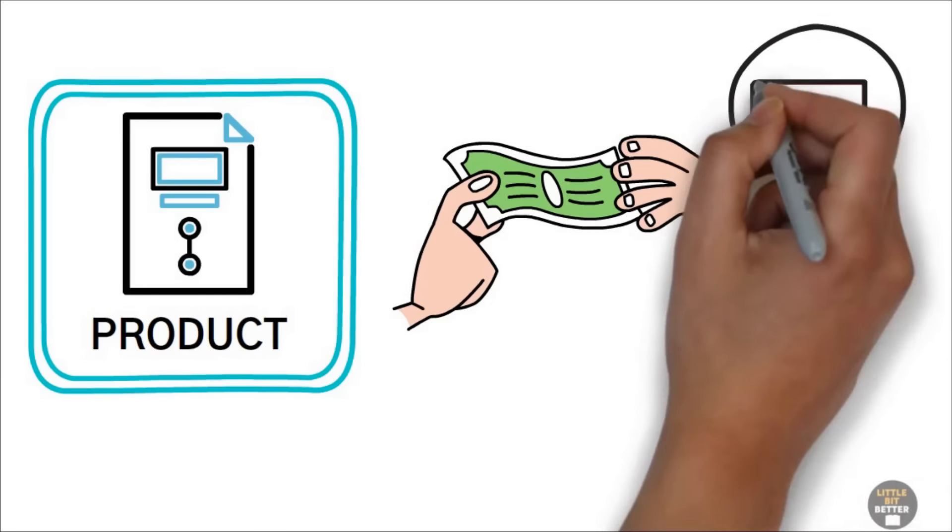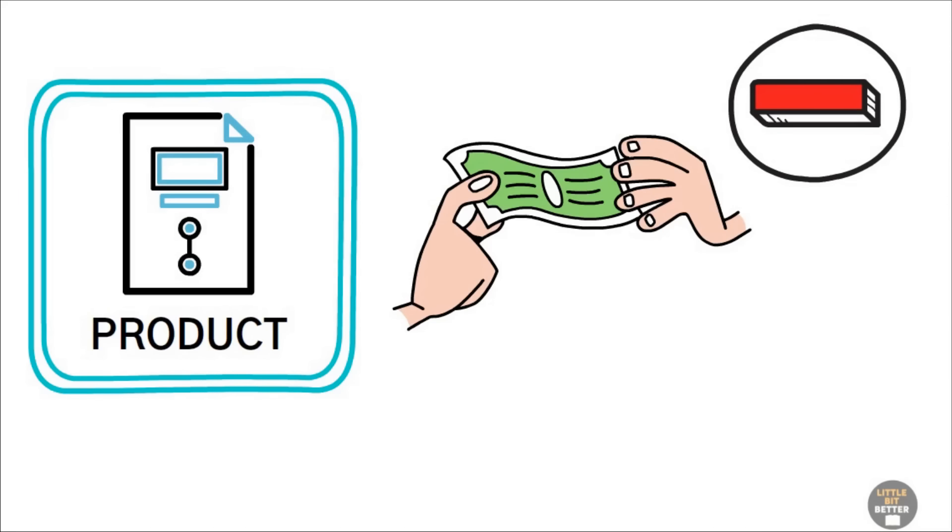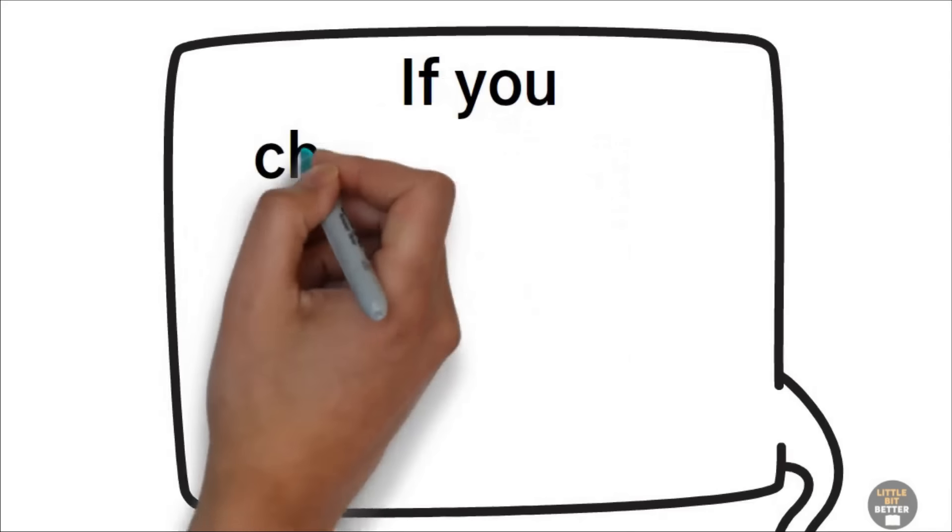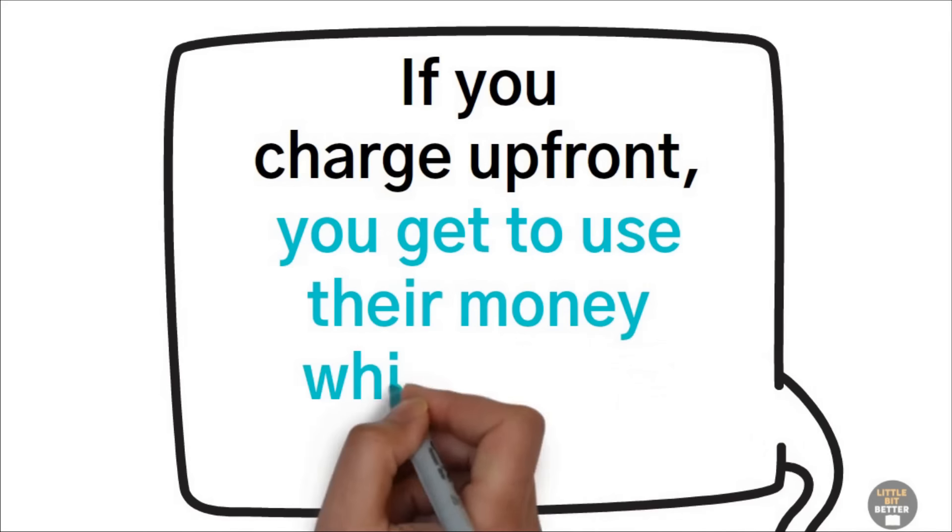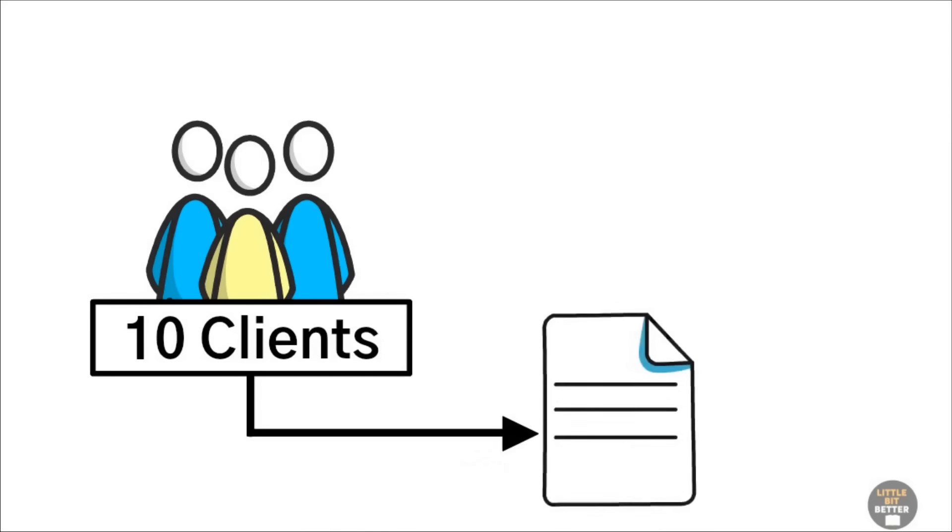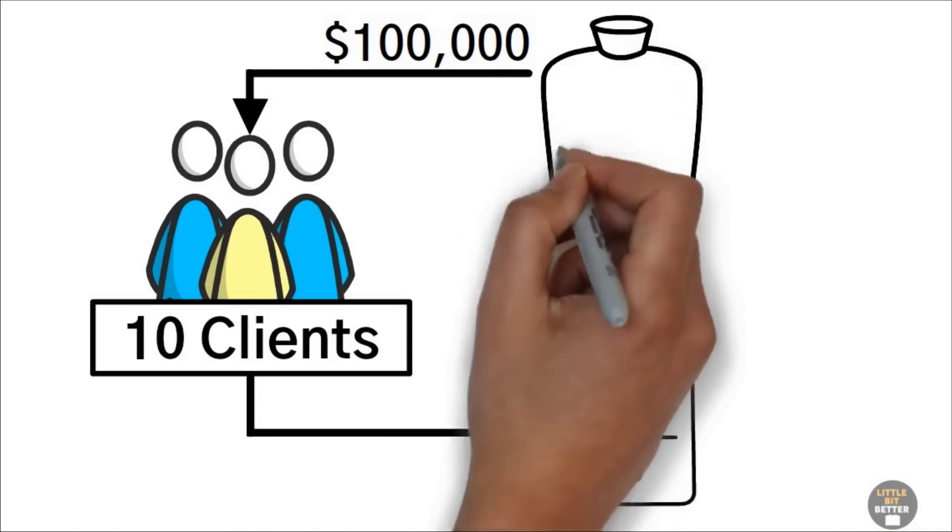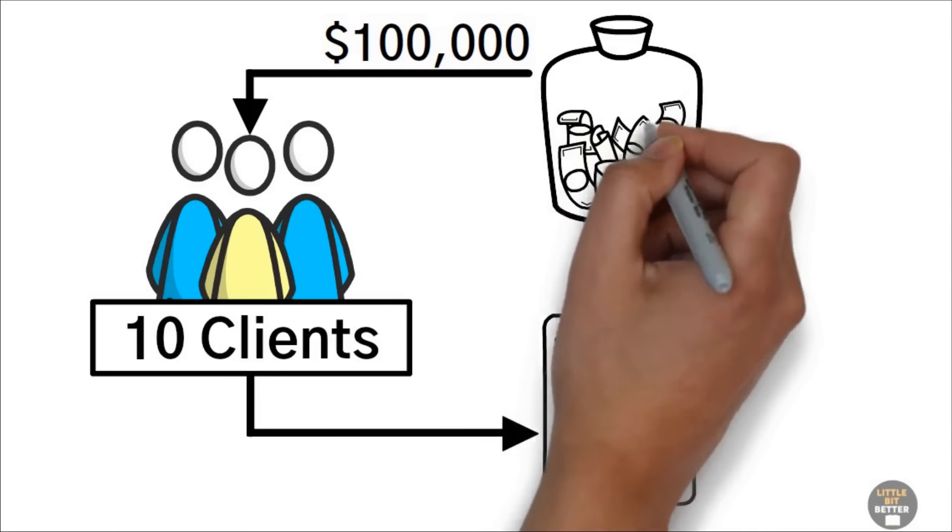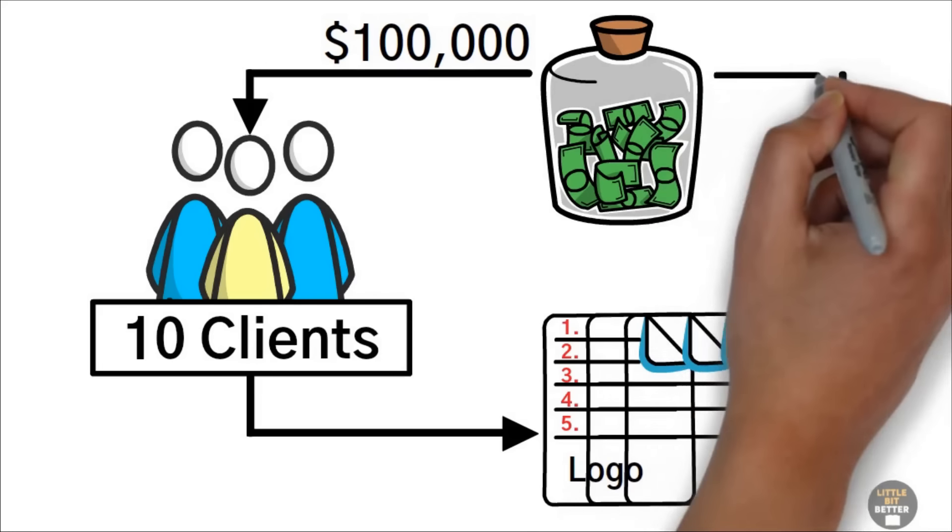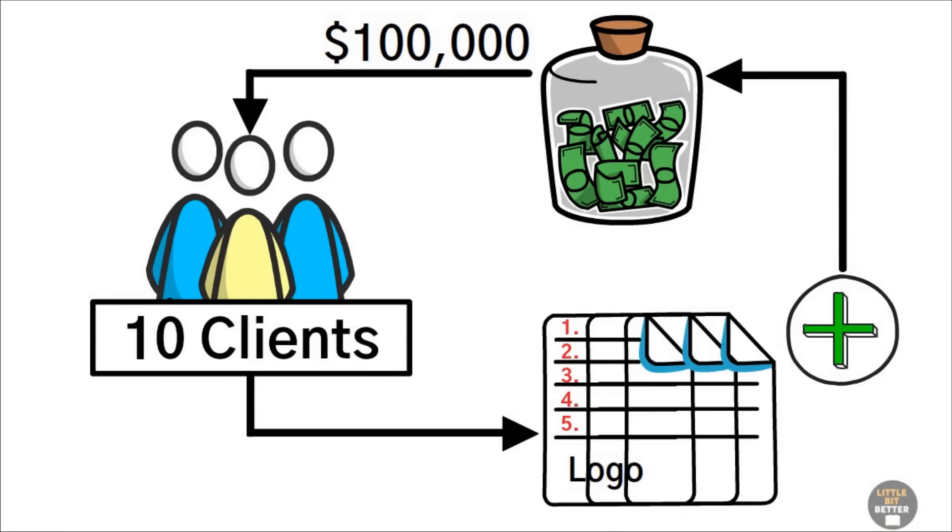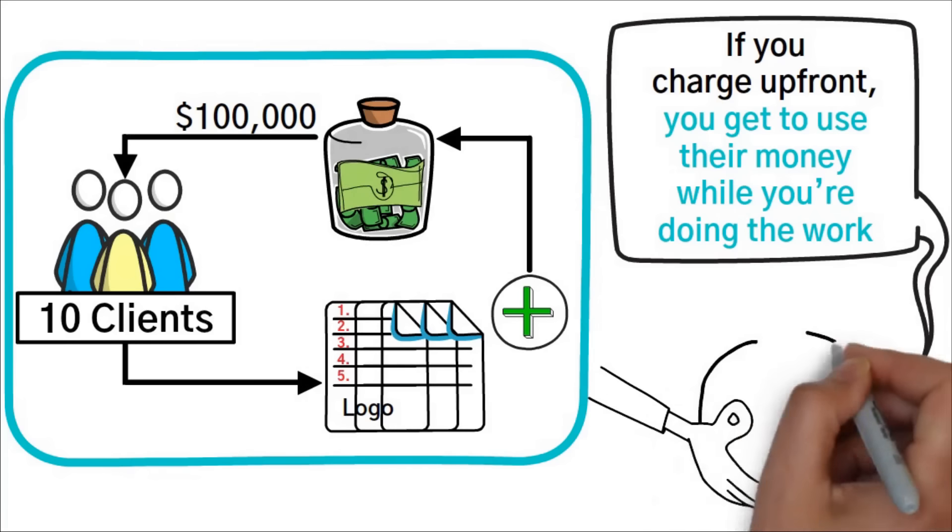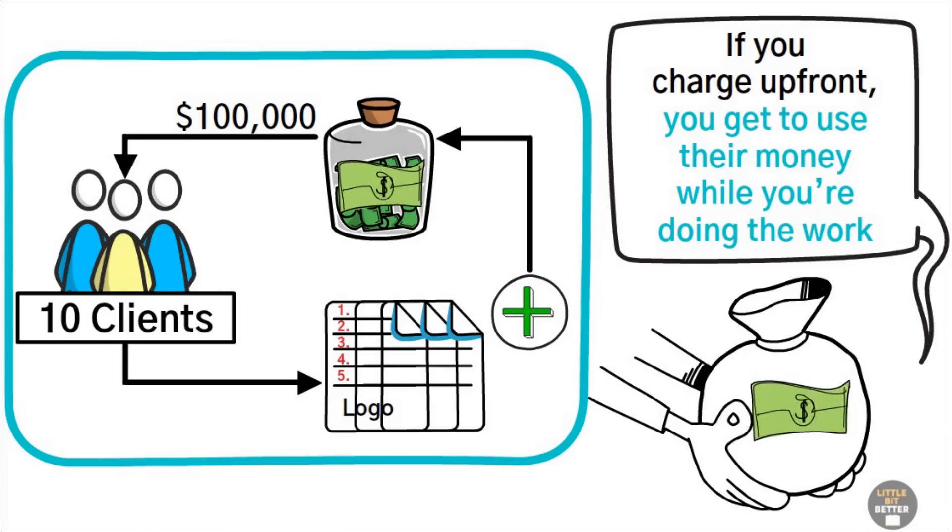Ted told Alex that right now he had a negative cash flow. On a typical project, it takes four to five months to get paid. Ted, if you charge up front, you'll get to use their money while you're doing the work. Imagine you have 10 clients for your five-step logo design process. Now you have $100,000 of your client's money to finance your business. Alex realized that the more logos they sold, the more cash they'd accumulate. They'd never need a loan. Ted and a potential buyer will look at your business as a cash generator rather than a cash suck.